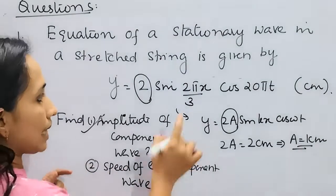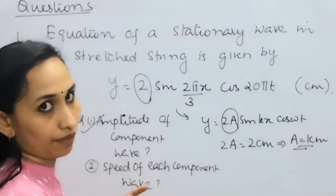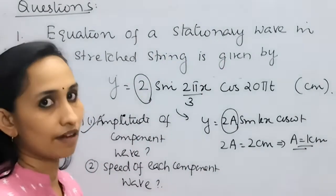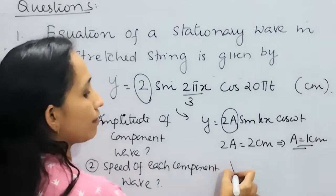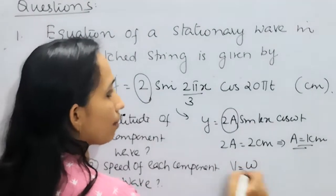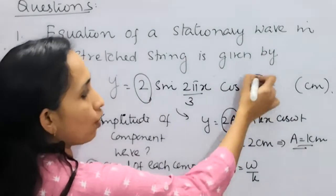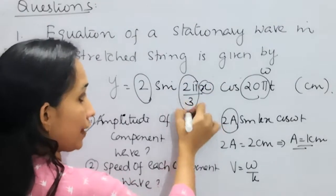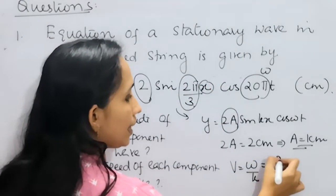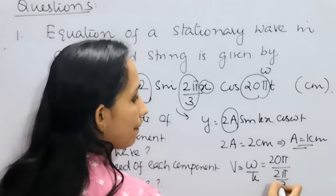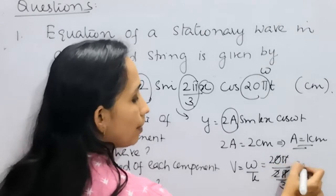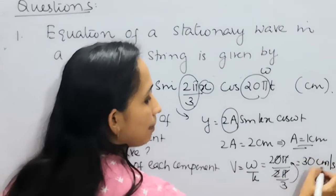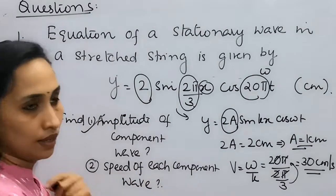So amplitude of each component wave is 1 cm. Now coming to the second part: speed of each component wave. We get a stationary wave by superposition of two traveling waves, and speed of each wave is given by ω/k. Omega is the coefficient of time, k is the coefficient of x. Substituting: 25π divided by (2π/3) gives 3 coming to the numerator, so speed = 30 cm/s.